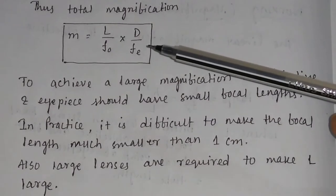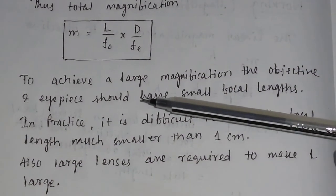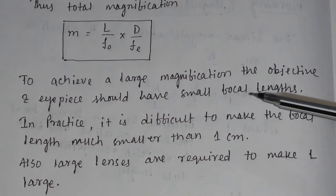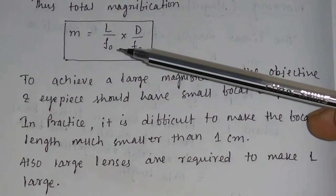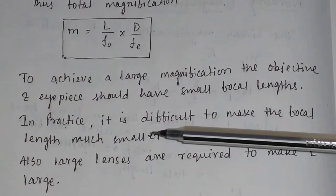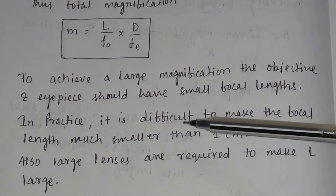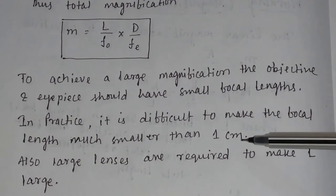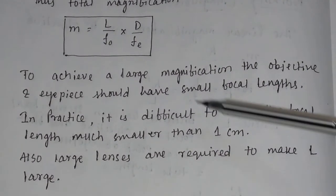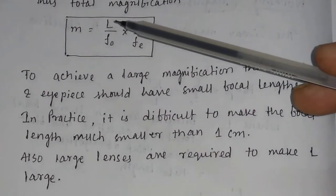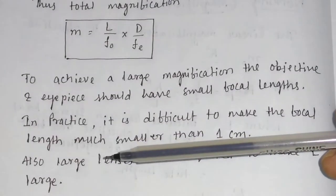From these equations, to achieve a large magnification, the objective and eyepiece should have small focal lengths — F0 and FE should be small. In practice, it is very difficult to make the focal length much smaller than 1 centimeter. Also, large lenses are required to make L large.